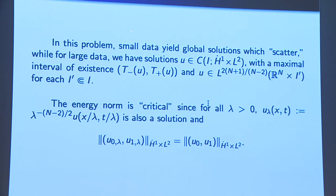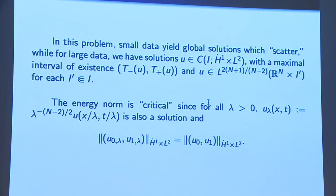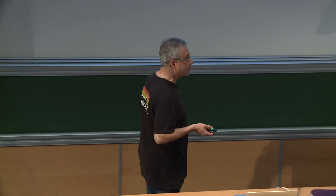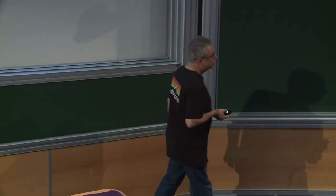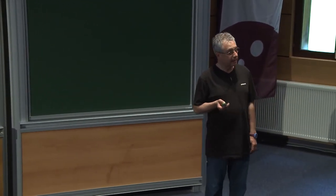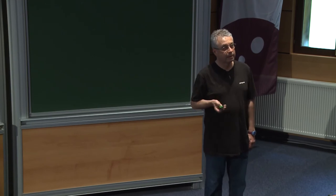The first thing is the small data theory. In this problem, small data yield global solutions which scatter. What does scattering mean? We say that a nonlinear solution scatters if it exists for all large time, and as time tends to plus infinity, the solution behaves like a solution of the corresponding linear equation. The small data theory goes back to pioneering works of Kato, Ginibre-Velo, Pecher, Kapitansky, and several others.